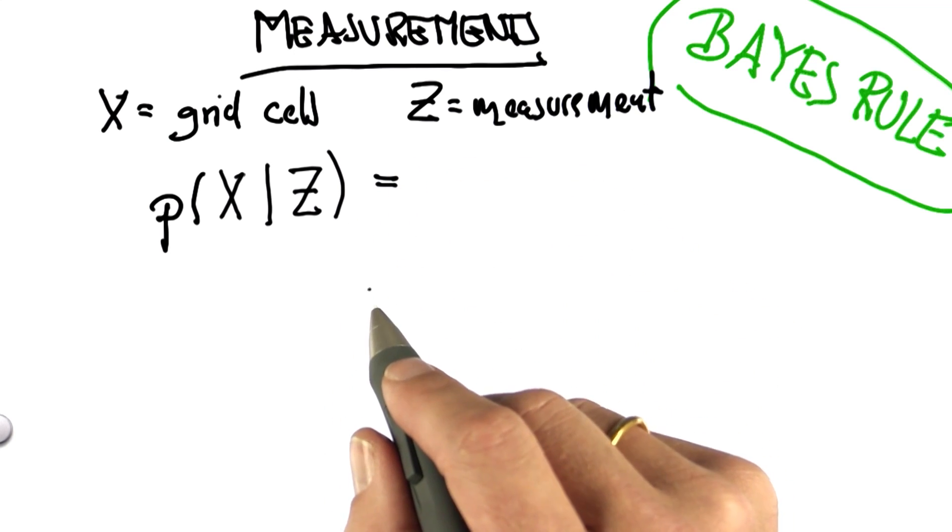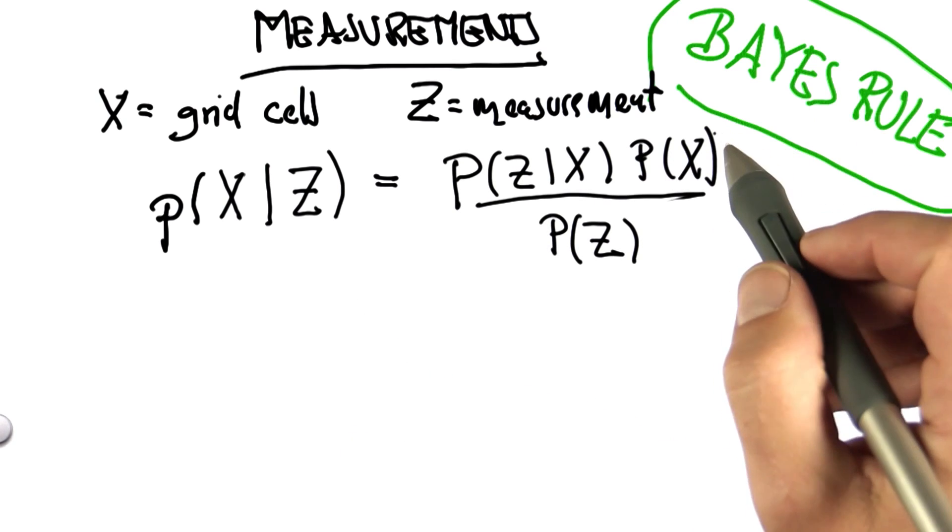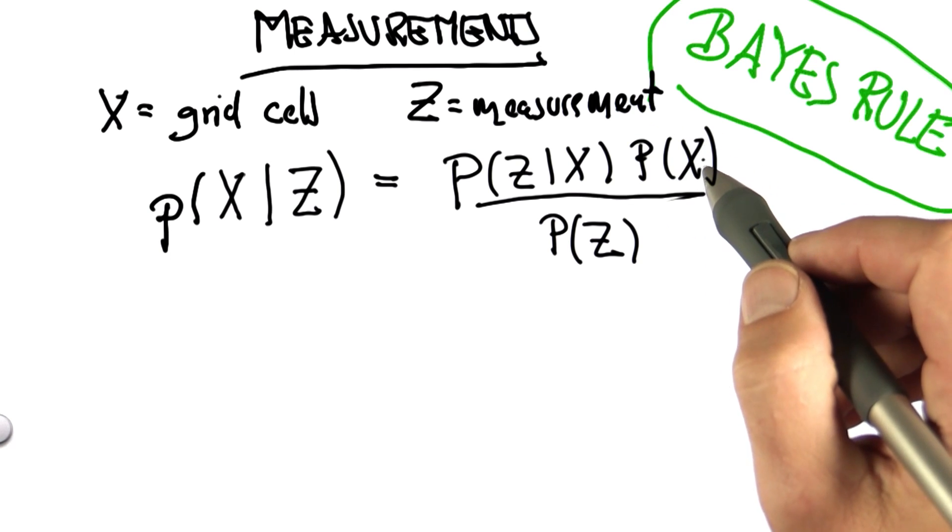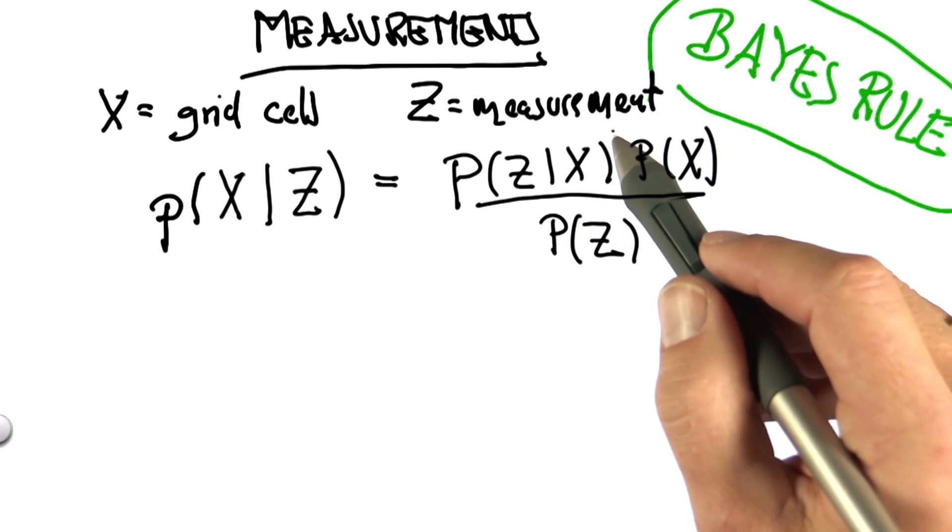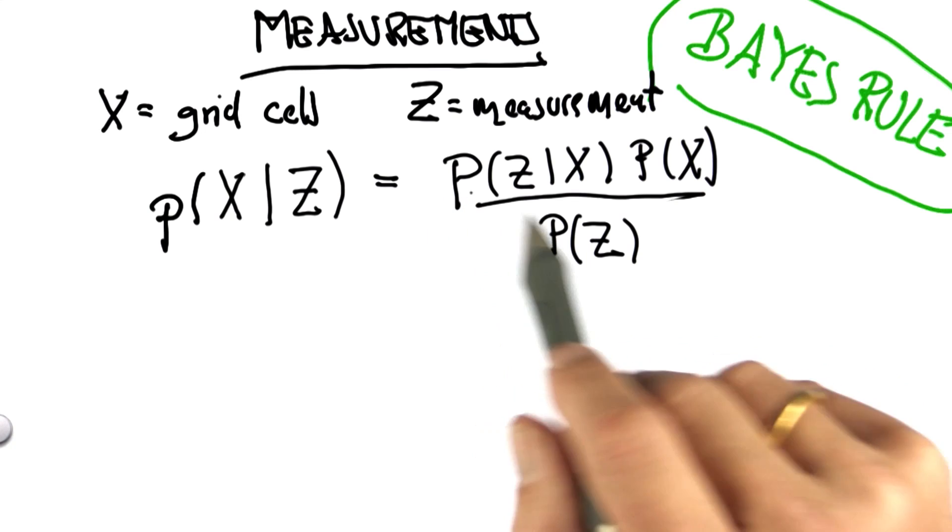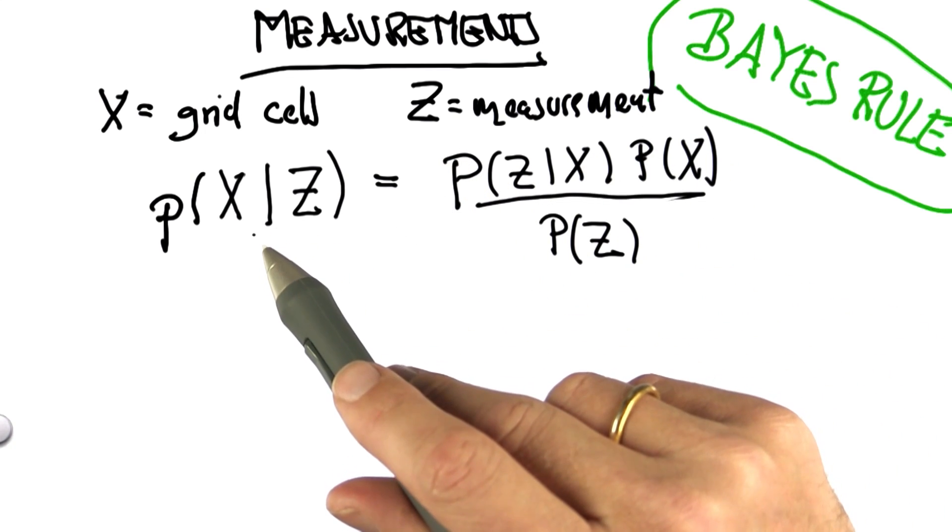It turns out Bayes' rule looks like this, and it might be a little bit confusing. But what it does is it takes my prior distribution, p(x), and multiplies in the chances of seeing a red or green tile for every possible location. And out comes, if you just look at the denominator here, the non-normalized posterior distribution we had before.